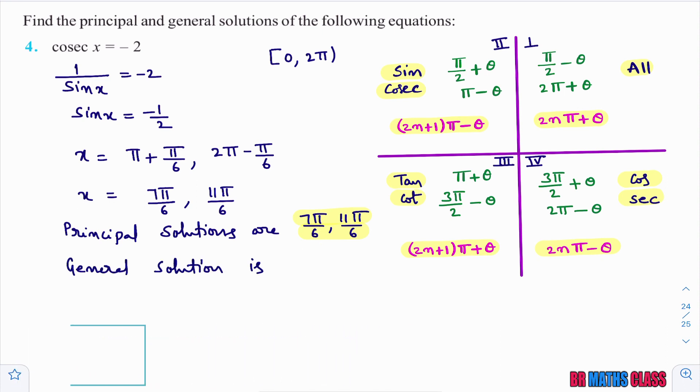General solution is - you observe this is of the form sin x equal to k. General solution for sin x equal to k, the formula we learned in the theory part, is n pi plus minus 1 whole power n into alpha. In this, what is alpha? Alpha is the principle solution. Here, you got two principle solutions. You can write any one. In place of alpha, here I'll write 7pi by 6. This is the general solution for given trigonometric equation.